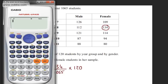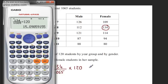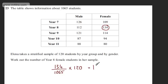We've got 134 divided by 1065, and I'm going to multiply my answer by 120. That gives me 15.098..., therefore it's going to be 15 students. So the final answer is 15 students for two marks.